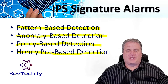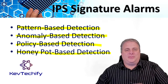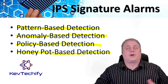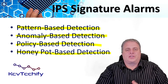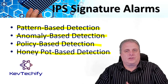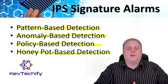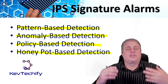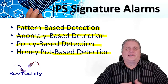The final trigger category is honeypot-based detection, which uses a server as a decoy to attract attacks. The purpose of this decoy server is to lure attacks away from your production servers and devices. This allows your administrator time to analyze incoming attacks and malicious traffic patterns to tune the different sensor algorithms.